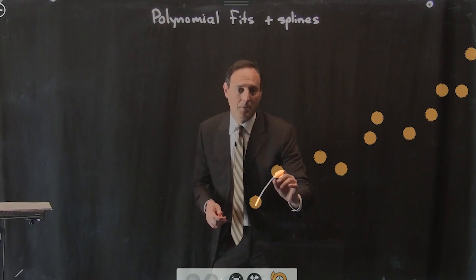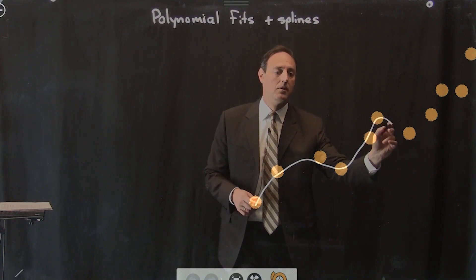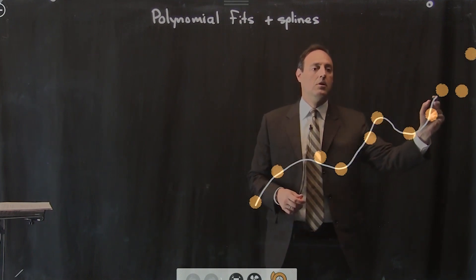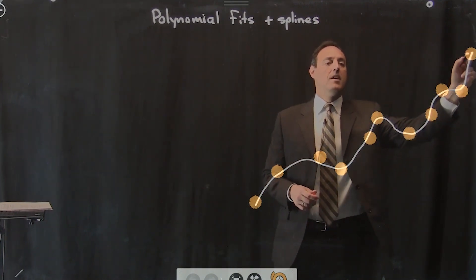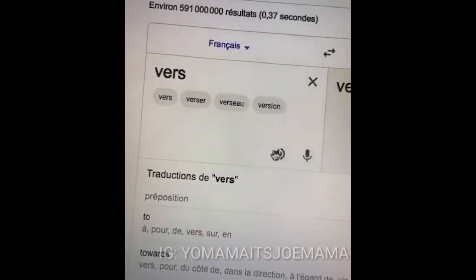The problem of supervised learning can also be expressed as the problem of function approximation or curve fitting. Many times the functions that interest us are way more complicated. For example, a function that takes in English sentences and outputs French translations.